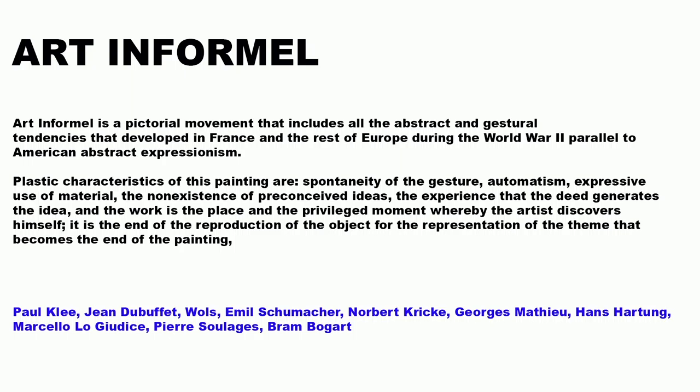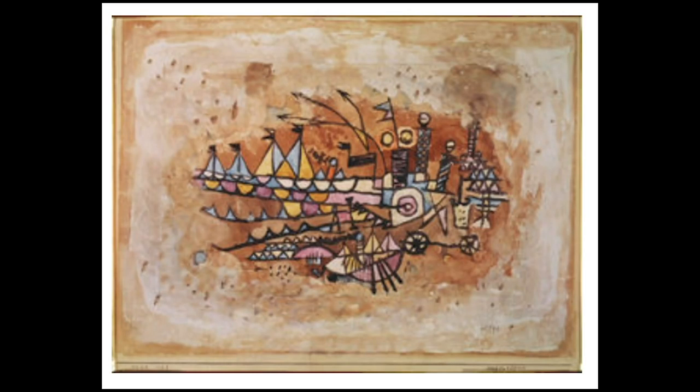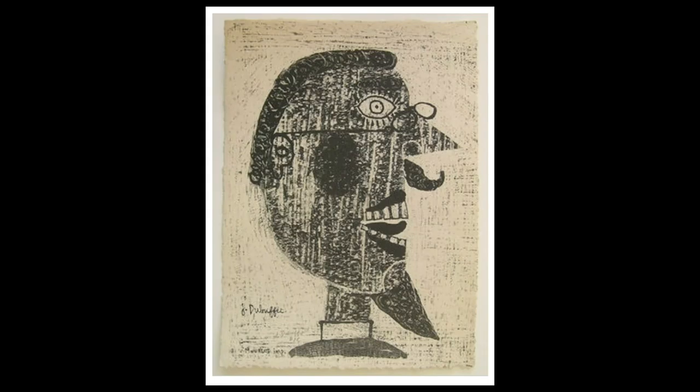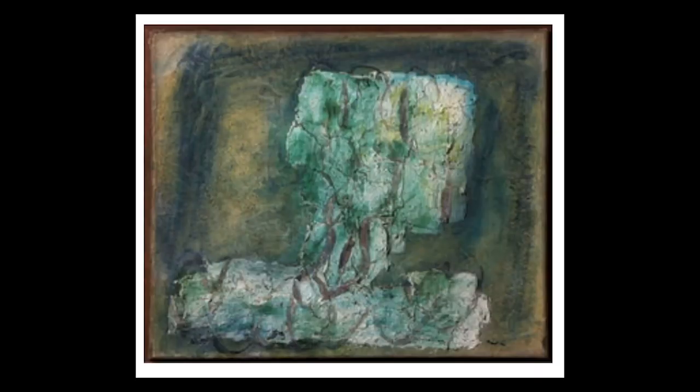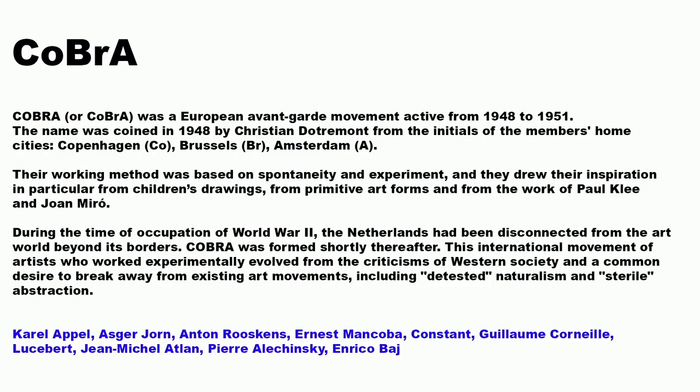Art Informel is a pictorial movement that includes all the abstract and gestural tendencies that developed in France and the rest of Europe during World War II, parallel to American Abstract Expressionism. Plastic characteristics include the spontaneity of the gesture, automatism, expressive use of material, and the non-existence of preconceived ideas — the experience that the deed generates the idea, and that the work is the privileged moment whereby the artist discovers himself. Art Informel is a continuation of Abstract Expressionism but in Europe rather than America. You can see work from Dubuffet and some paintings from Paul Klee.